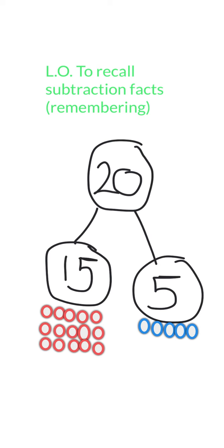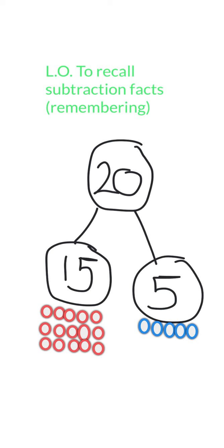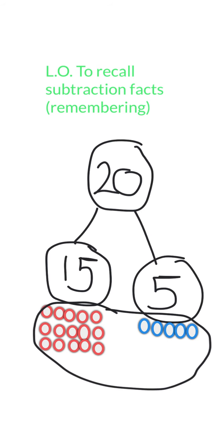Here you can see a cherry model that I made — hopefully you've made the same one on one of your cards. Here we've got the number 20. One part of 20 is 15 and the other part is 5. So you can see that 15 and 5 make 20 when they're put together. In total for 15 and 5 we have got 20.